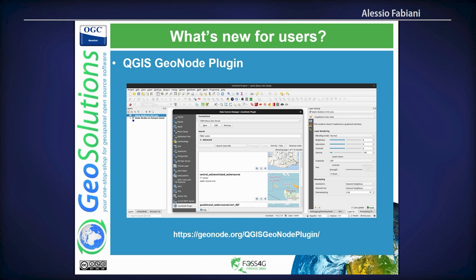Another big addition is the QGIS plugin. It pulls information from any Geonode instance through the Geonode REST API, so you can search for rasters and vectors. Depending on your permissions — it supports OAuth2 or basic auth — you can pull only the WMS image or use WFS and WCS services to get the actual data, work on it in QGIS, and commit changes directly to Geonode: data editing or style editing. You can also upload new datasets from QGIS.